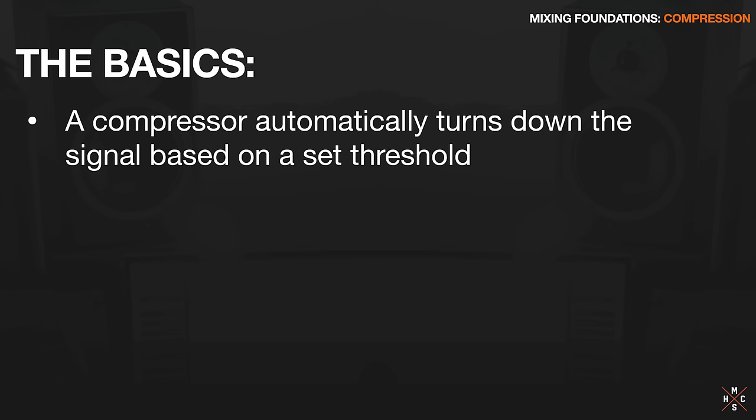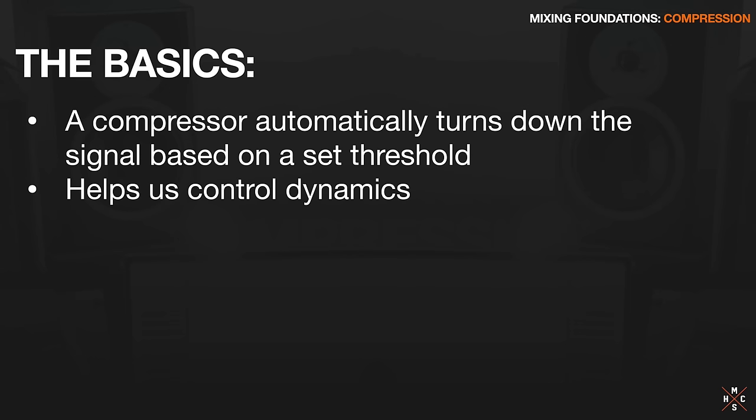What is a compressor? A compressor just automatically turns down the signal based on a set threshold. It's like a really simple robot - you tell it, when the signal gets above this level, turn it down. That's essentially what the compressor is doing. It helps us control the dynamics. Dynamics is just the difference between the loudest and the quietest parts of the sound. When you start using compression, it does some funny things to our minds. By turning down the loudest peaks, it makes the quieter sections sound louder, which makes the overall track sound louder.